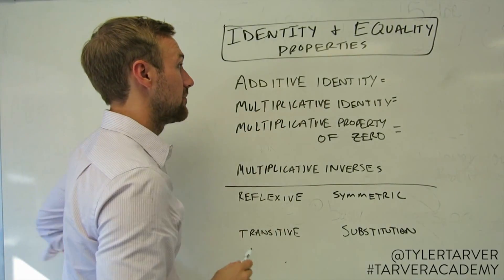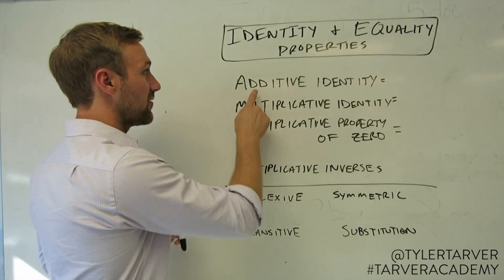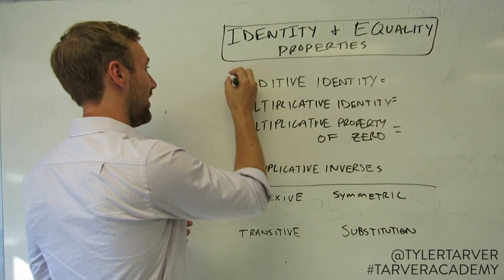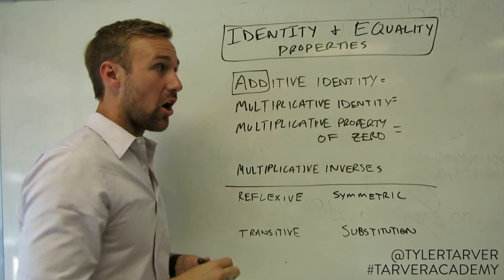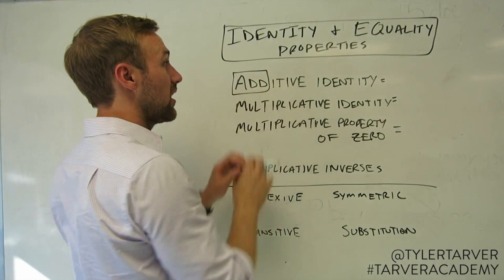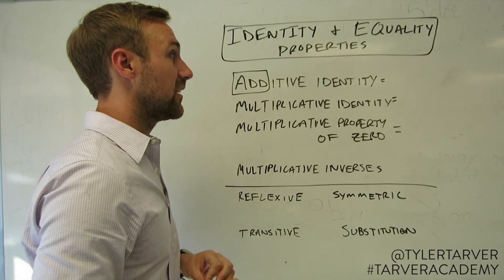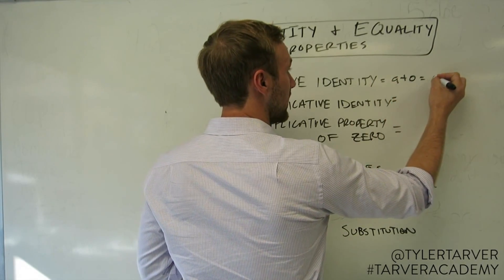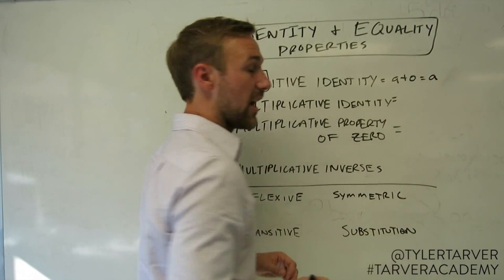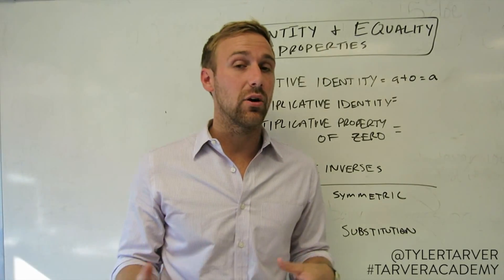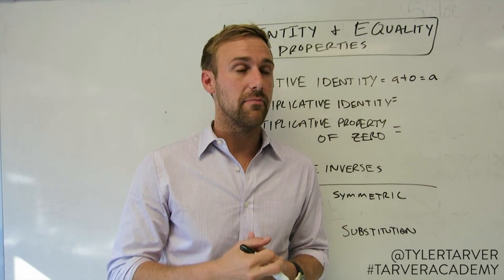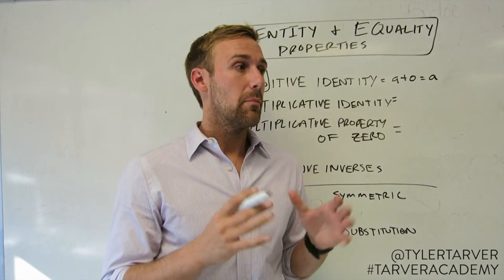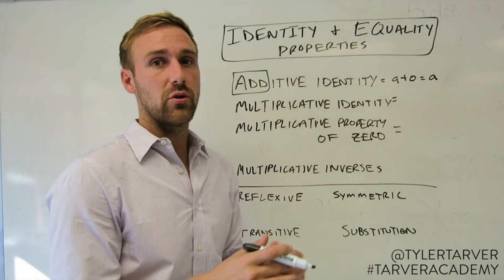The additive identity. First off, this sounds like add — you're doing addition. Well, guess what? You are adding. The property here with the additive identity is that a plus zero is going to equal that number. It means any number plus zero is still going to be itself. This is something you've known for a long time, but this is essentially what makes it true.